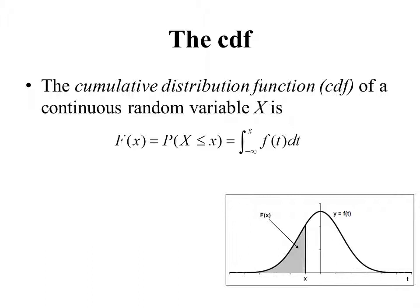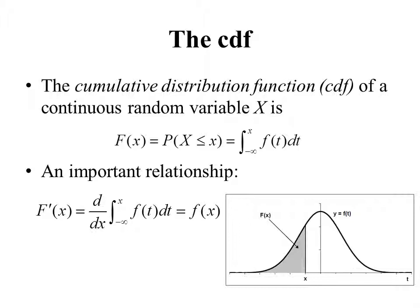Similarly to Chapter 2, we define the CDF, the cumulative distribution function. It is denoted capital F(x), defined as the probability that X ≤ x, and equals the integral of the density function f from negative infinity up to x — we use t as the variable of integration to avoid confusion with the upper limit. Graphically, the CDF value is the area underneath the density curve to the left of x. One important relationship: the derivative of capital F equals little f, by the second fundamental theorem of calculus.